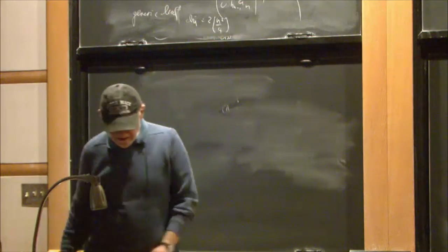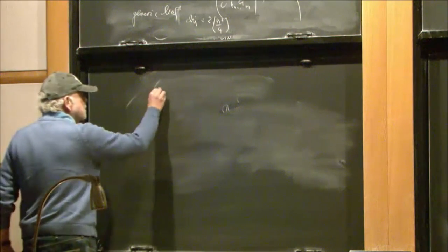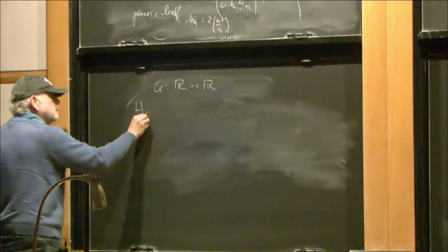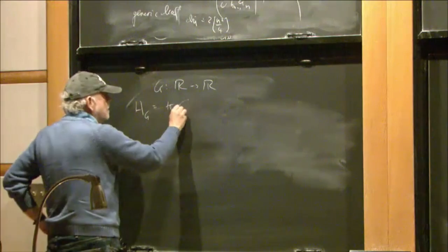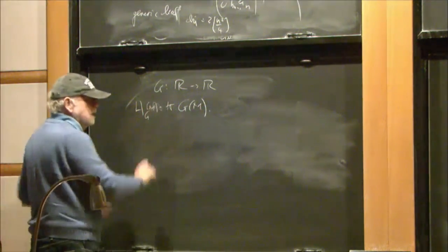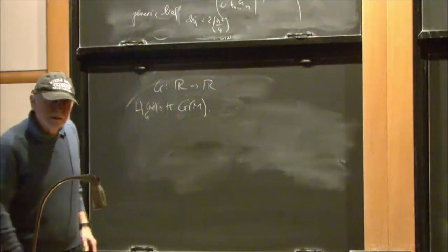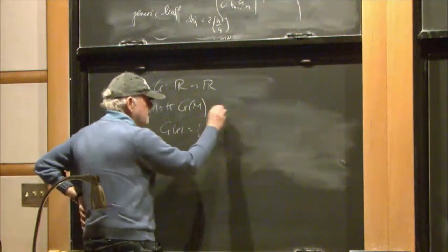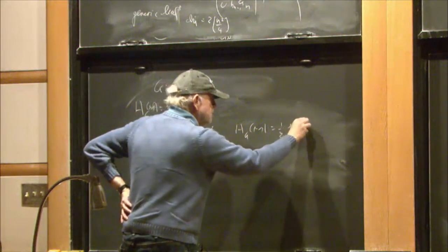Okay, now, a distinguished class of Hamiltonians look like this. So, let G of X be a function from R to R and you introduce a Hamiltonian HG which is the trace of G of M. H of G of M is a Hamiltonian on the space of matrices. G of M is obtained by the functional calculus. So, for example, G of X is a half X squared HG of M which is one half the trace of M squared, for example.